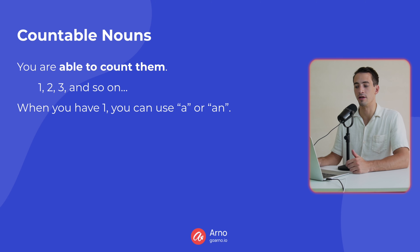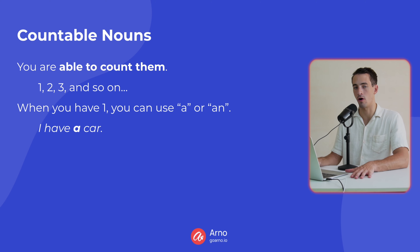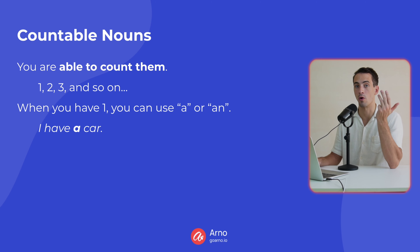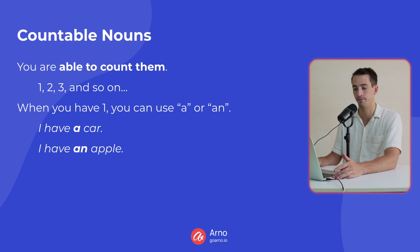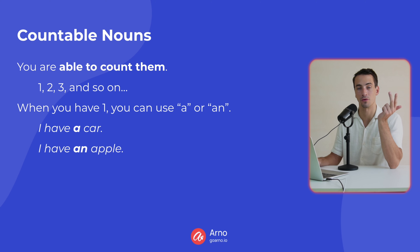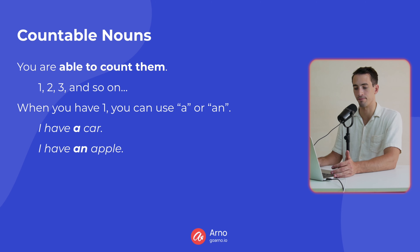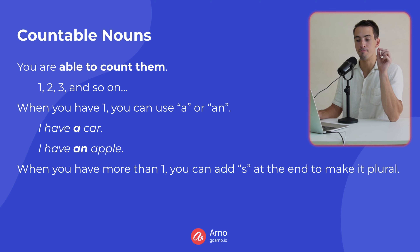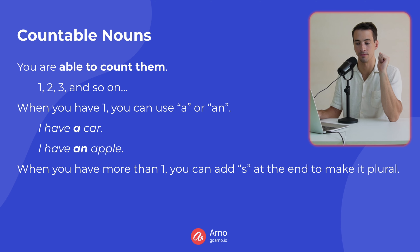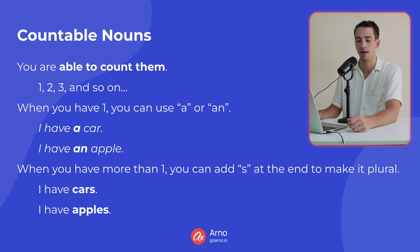With countable nouns, you can use 'a' or 'an' when you have one. For example, 'I have a car.' Car is a countable noun because you can have one car, two cars, three cars — you can count the number of cars. 'I have an apple.' You can have one apple, two apples, or three apples. Apple is a countable noun.